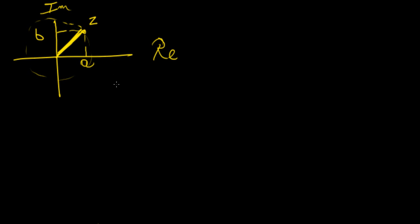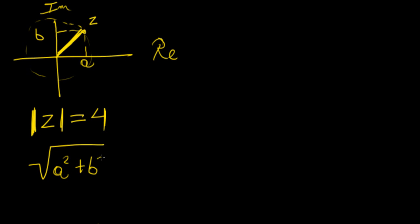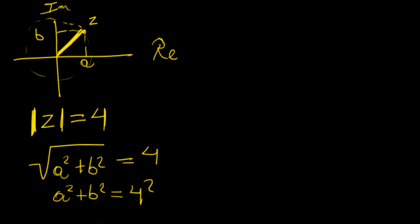Now, what happens when we're given something like this — a set equal to 4? Those two bars represent the magnitude of that complex number. We know that the magnitude of a complex number is going to be the square root of a squared plus b squared, and the other side is equal to 4. If we rewrite this as equal to 4 squared, we notice this is the formula of a circle, where a and b are the same as x and y, and the radius is 4.